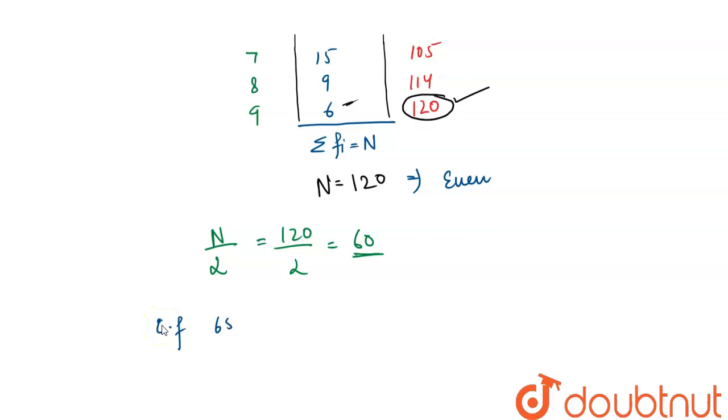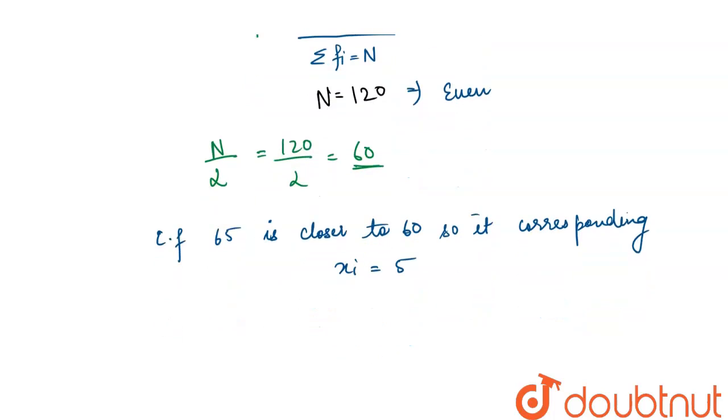Cumulative frequency 65 is closer to 60, so its xi is 5. Therefore, 5 is the median. So this is our final answer. Thank you.